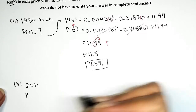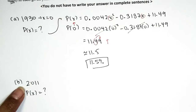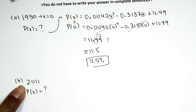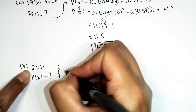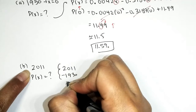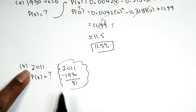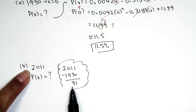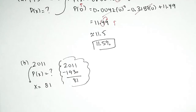Now we want to find the percent in the year 2011 for part b. P of X represents the percent — we need to find what X value corresponds to 2011. X represents years past 1930, so if it's 2011, I want to know how much time has passed. We take 2011 minus 1930, which gives us 81. So the year 2011 corresponds to X equals 81, and we want to find P of 81.